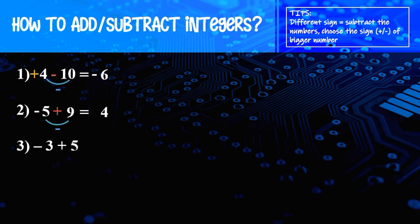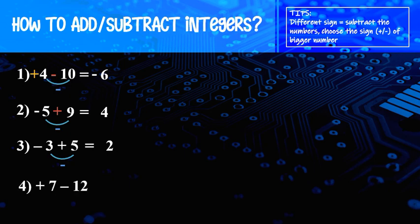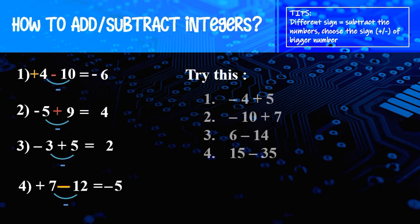Number 3: look at the sign — different sign, negative and positive. Different sign, so minus the number: 5 minus 3 equal to 2. 5 is bigger and the sign for 5 is plus, so the answer is positive 2. Next: positive 7 minus 12. Different sign, minus the number: 12 minus 7 equal to 5. 12 is bigger, the sign for 12 is negative, so the answer is negative 5.